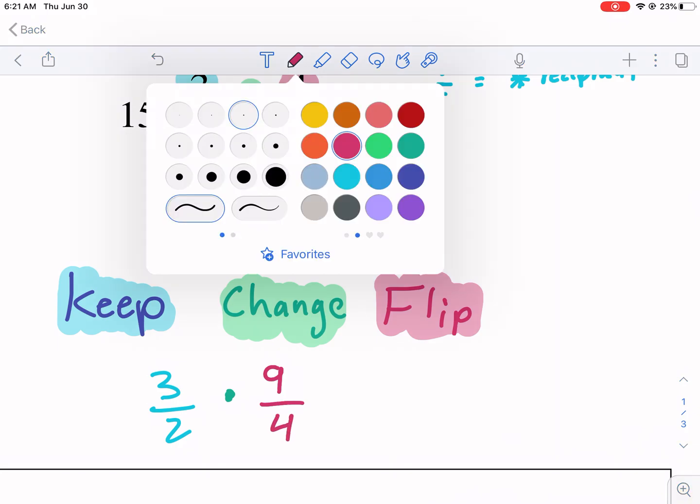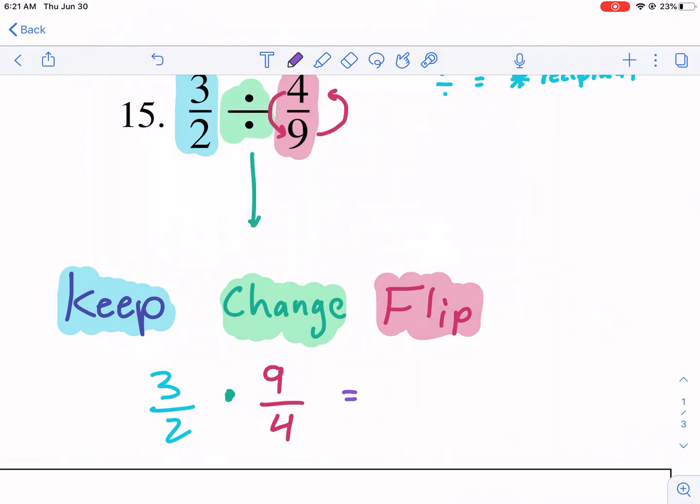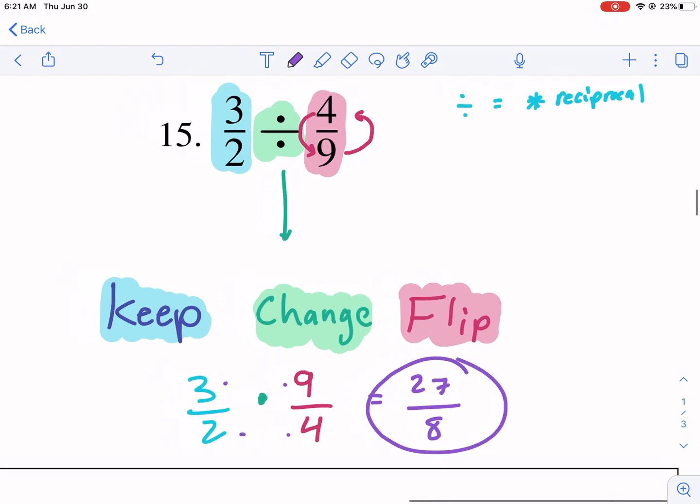When we put that all together, let's use purple, we're going to do the same process. Top times top, that gives me 27, over bottom times bottom, that is eight. And this is our answer, 27 over eight.